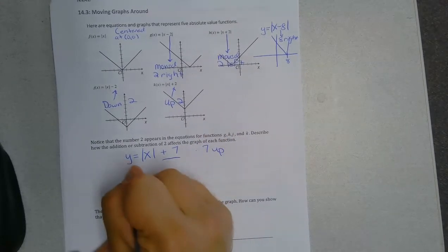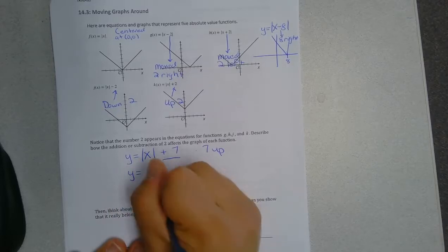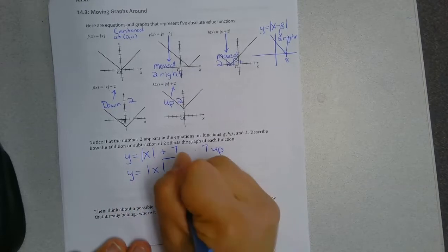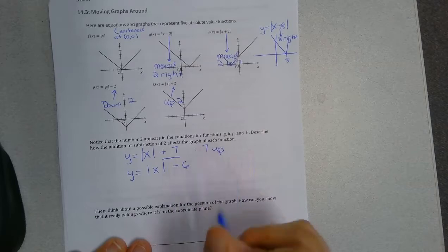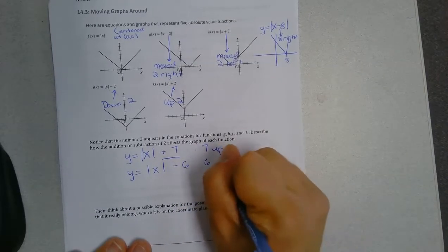If I did y equals the absolute value of x minus 6, that minus 6 moves it six spots down.